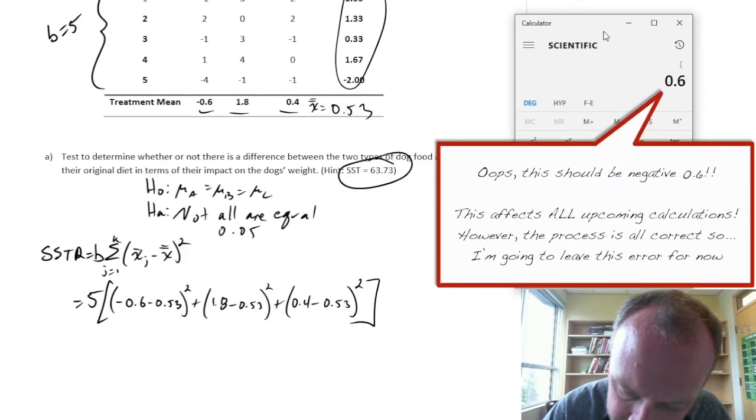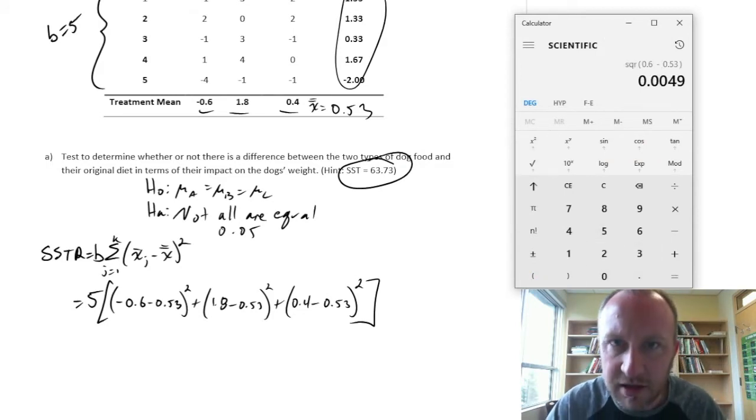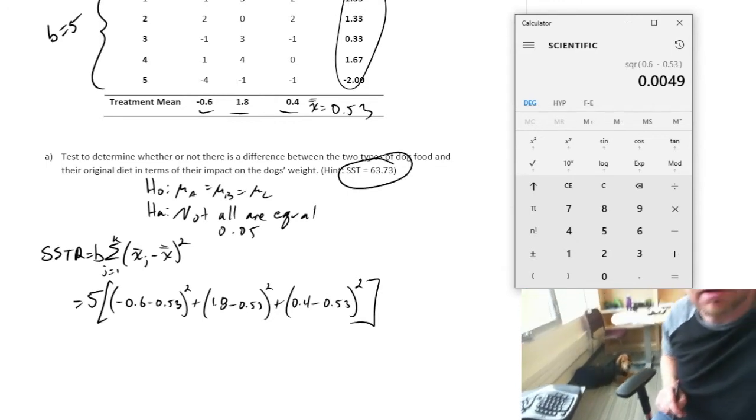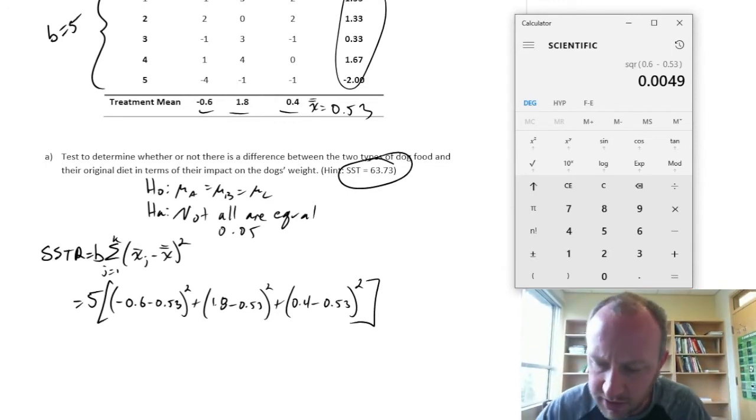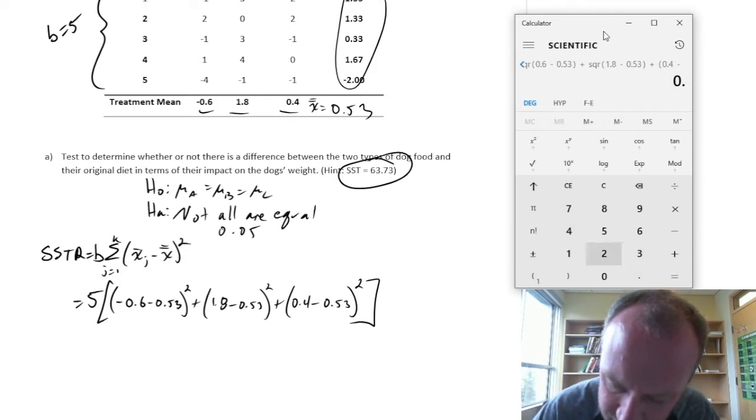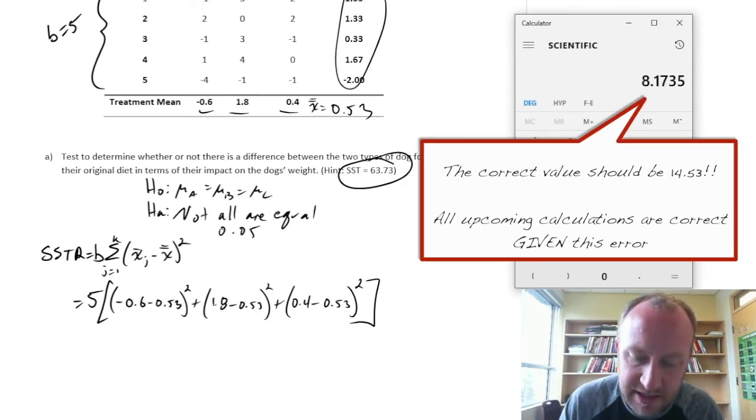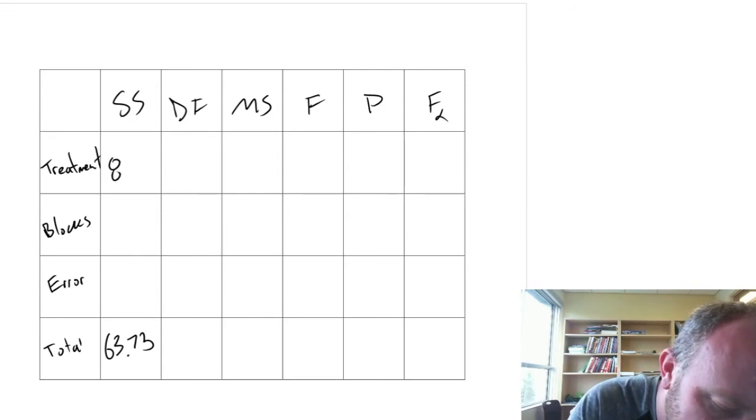So 0.6 minus 0.53 squared. Can you hear my dog? She's making gross noises. Hopefully you can't hear those noises. I don't want to restart this video just because of that. Okay, that's squared plus open brackets. 1.8 minus 0.53 squared plus open brackets. 0.4 minus 0.53 squared equals 1.63. And now we multiply that by 5. So 8.17 for our sum of squares treatment.